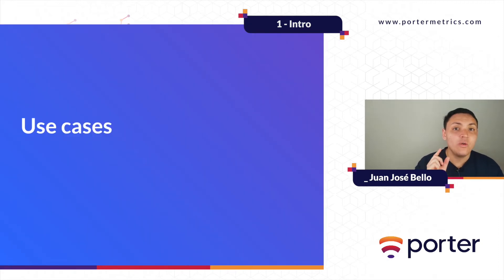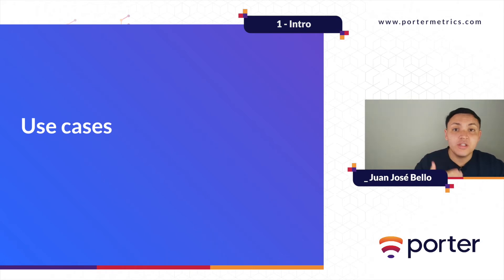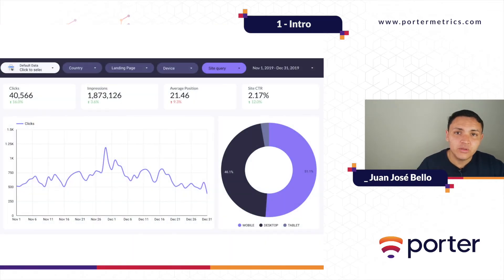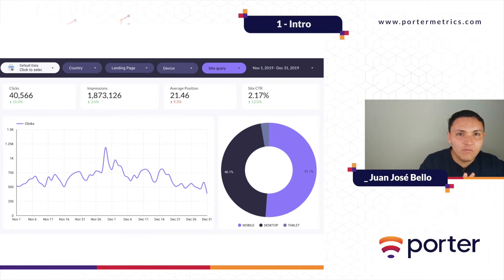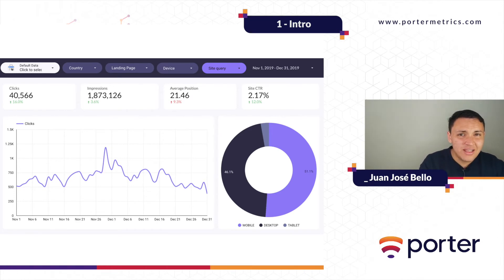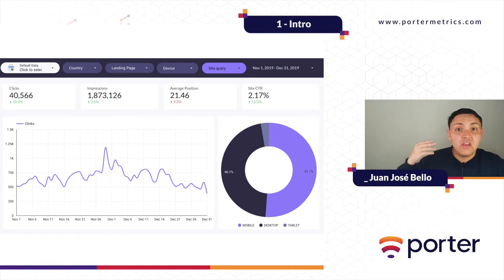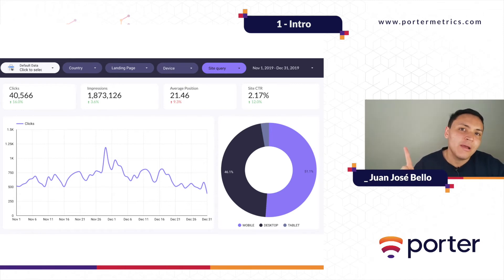It is time to get started with Data Studio and we will do it by showing you use cases. I will show you how other companies use Google Data Studio to automate their reports and find answers. The first example is this SEO report. Most people talk about SEO, but measuring it is sometimes hard, especially for customers. With this kind of dashboard, you can present data that a customer can understand — for instance, knowing they are growing their visibility or getting more traffic from search engines.